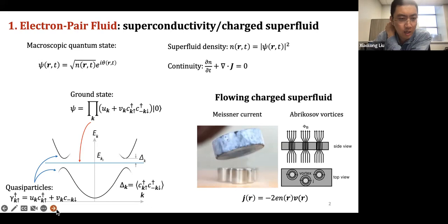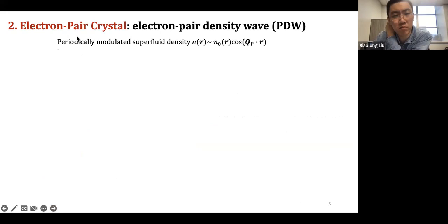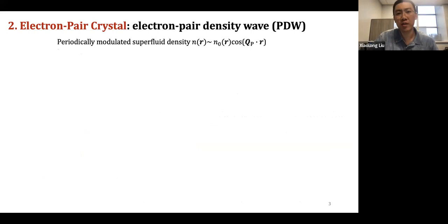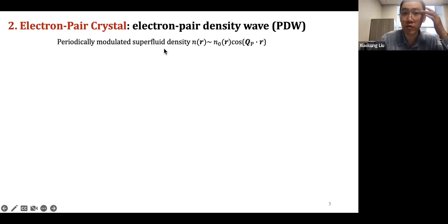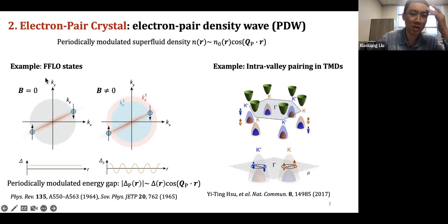I'm going to show that at the end of the talk. The other topic — electron pair crystals in the core pair density wave states — is more interesting to the audience. By definition, it is a modulation in the superfluid density: locally, how many pairs you have and how does it vary. Those are the quantities we try to measure experimentally. Formally, you can write a pair density wave or the superfluid density modulation with an amplitude and a sinusoidal modulation in space with wave vector Q_PDW.